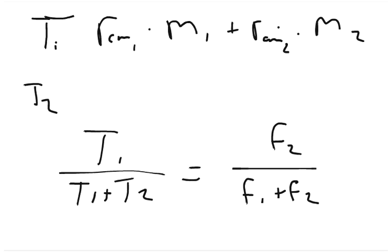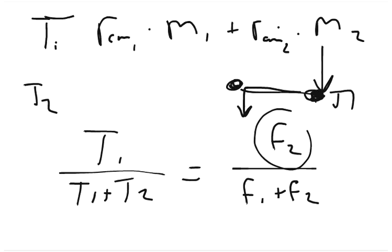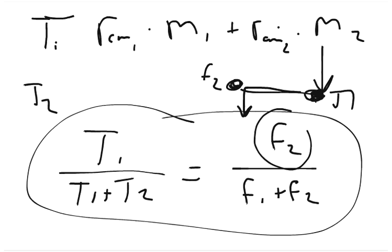So the torque on this hinge right here is going to allow the lever bar to push down on this hinge over here. If we're calling the torque on this one T1 and the force on this one F2, this equation is the one you want.